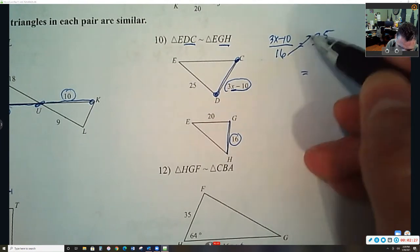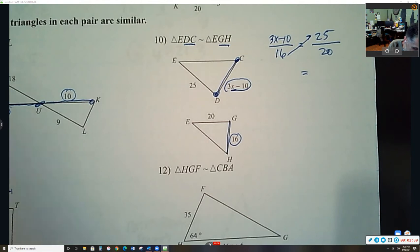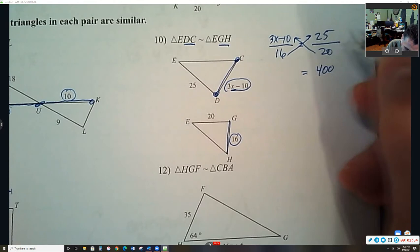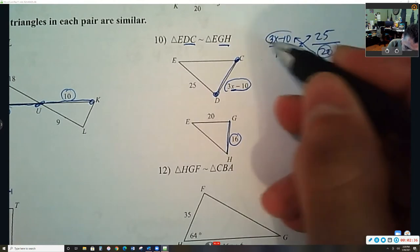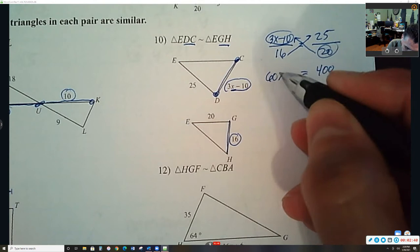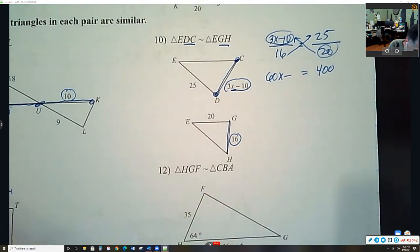Multiply 16 times 25, that's 400. And then multiply 20 to both of these. So 20 times 3 is 60x and then 20 times 10 is 200, right?